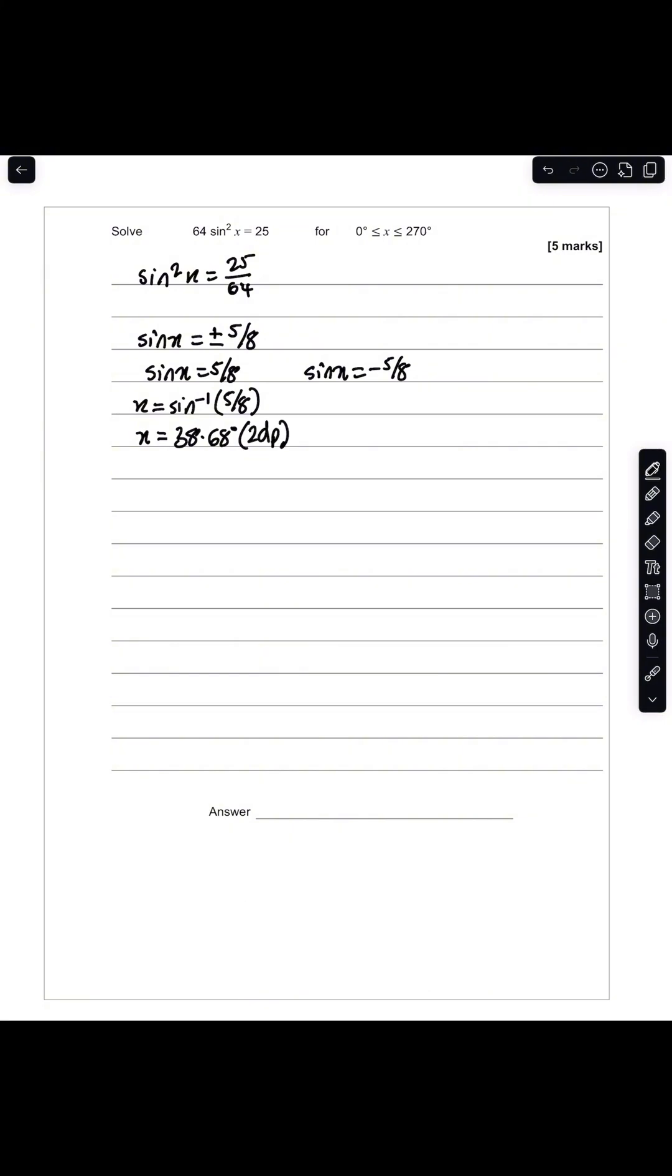To determine the other value of x, I can simply use my sine graph. You would all be expected to know what this looks like. The sine graph looks something like this, in which case this is 180 and this is 360. So 38.68 is somewhere here. If we extend this line, that also meets the curve at this point here.